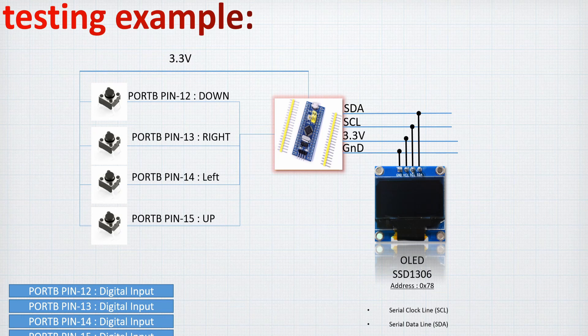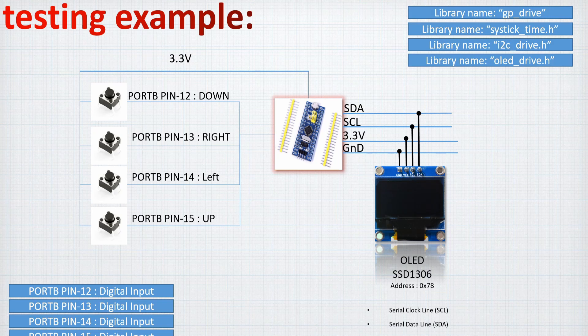The OLED screen will be connected to the STM32F1, which will be connected to four push-buttons as digital inputs with directions: down, right, left, and up. The libraries we are going to use will be the JPEEK library, the SysTick library which generates delays, the I2C driver library, and the OLED driver library.